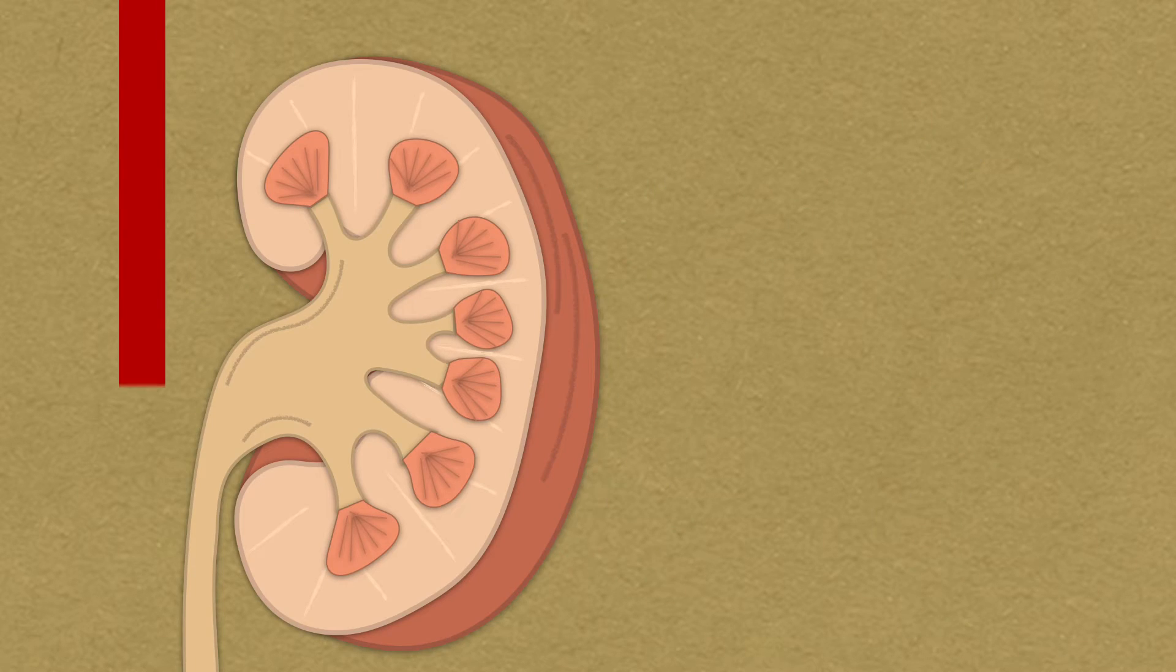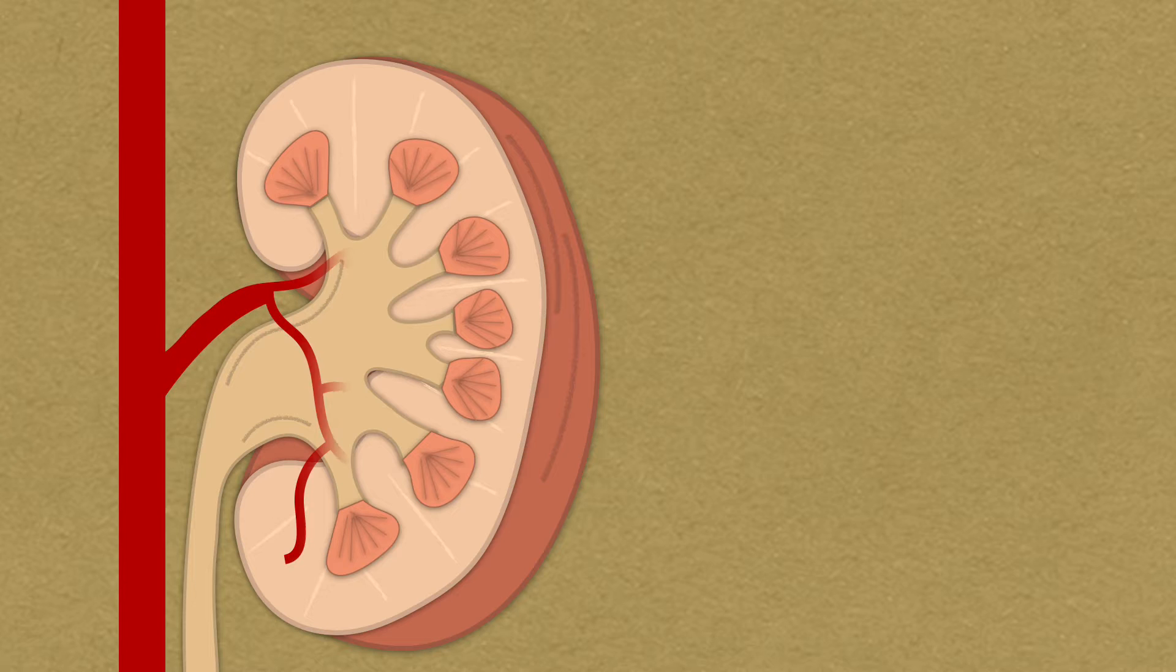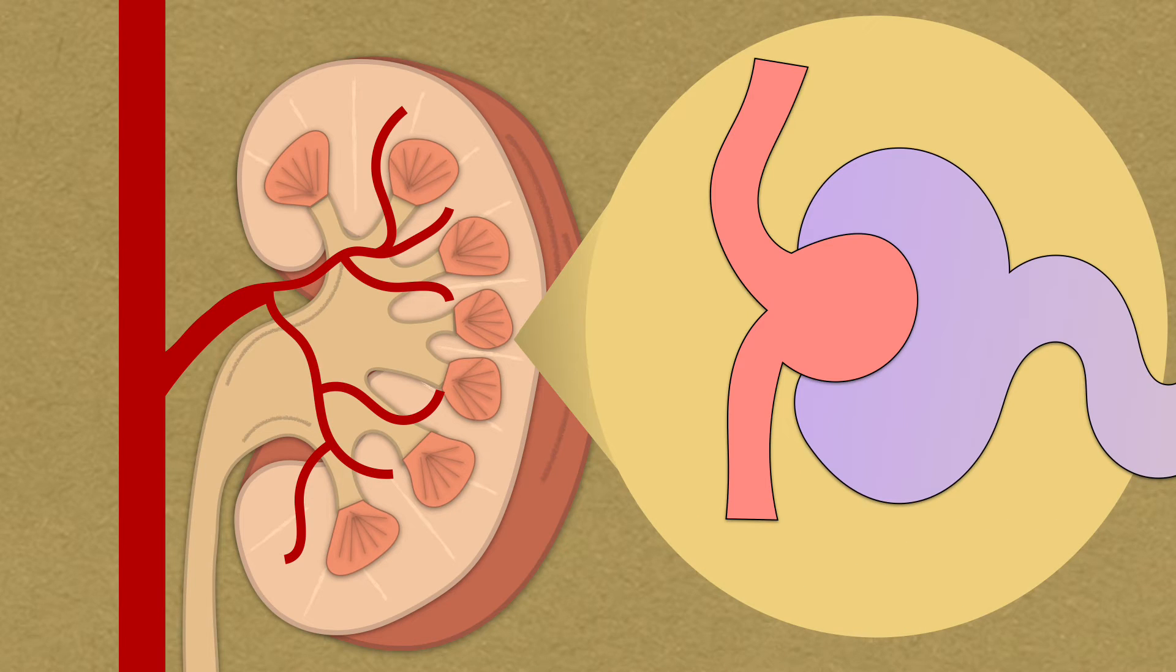Blood enters the kidney through the renal artery, which branches into smaller vessels until the blood reaches the glomerulus. A healthy glomerulus allows fluid, mostly water, small molecules and waste in the blood to pass through, but does not allow the passage of larger molecules like proteins and blood cells, which stay in the vessel.